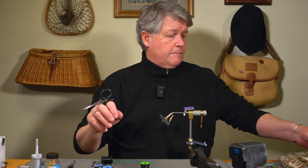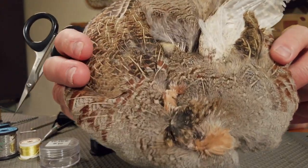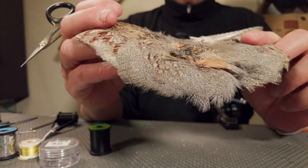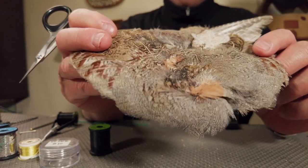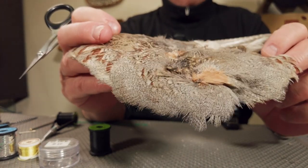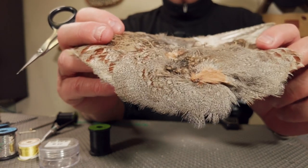And then for the soft hackle, Hungarian partridge. Hungarian partridge has great variegation and really makes the fly look the way I want it to look in the water.